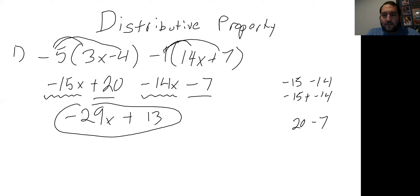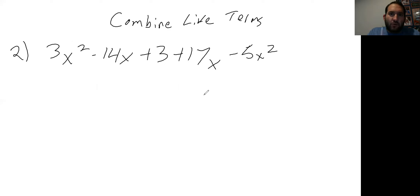Next problem — we're going to look at combining like terms a little bit closer. When we combine like terms, we're looking for the same variable and the same exponent. Those will be able to be combined. So pause, write down this problem, try it, or follow along with me. The problem is: 3x squared minus 14x plus 3 plus 17x minus 5x squared.